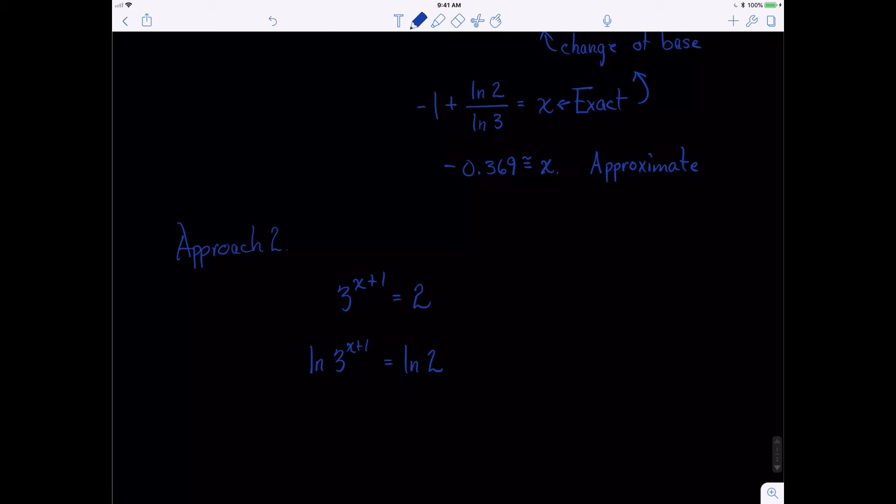We're just using the rules of algebra that say if you do something to one side, you can do the exact same thing, if you can do whatever you want to one side, provided that you do the exact same thing to the other side. Well now, now we can use property 3 from our previous lesson, and we can move the exponent out in front. So this becomes x plus 1 times the natural log of 3 equals the natural log of 2.